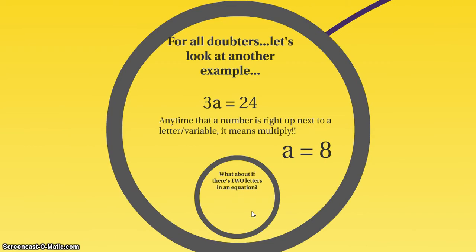Okay, so some of you might be feeling like it should be harder than this. So for all you doubters, let's look at another example. 3a equals 24. Anytime that a number is right up next to a letter or a variable, so see right here in 3a, it means multiply. So hopefully you're thinking to yourself, okay, 3 times something has to equal 24. And I know my multiplication facts, so I know that this is going to be 8 because 3 times 8 is the only thing that will balance it out and equal 24. And again, if you want to make it look all mathematician-like, then it'll be a equals 8, just like that.